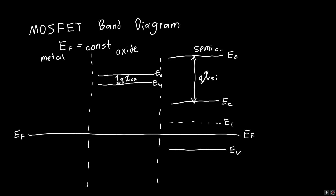For the metal, we know the work function. There's a difference in name between work function and electron affinity, but they're talking about exactly the same concept — they were just discovered separately, so unfortunately they've got different names. So phi m is the work function of the metal, and this is the vacuum level.